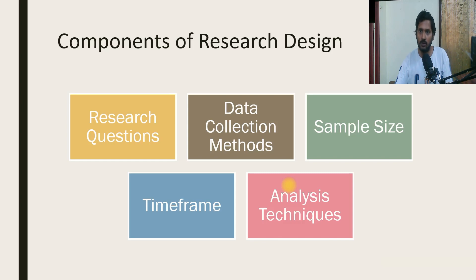In research, you decide what you want to find out. Then comes your data collection methods. Think of this as choosing the right cooking tools. You need the right utensils to get the job done. In research, you select how you will gather information through surveys, interviews, or observations.